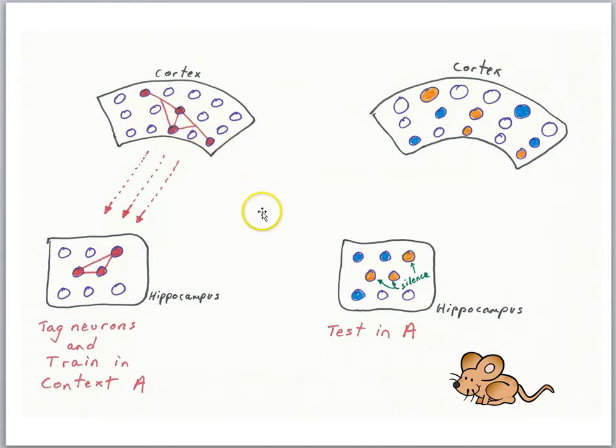And then if you test the animal two days later, you put them in the chamber, but you silence the hippocampus cells, the animal fails to retrieve the memory and the cortical cells are not activated.